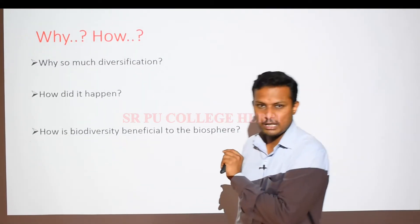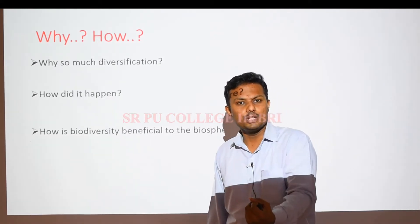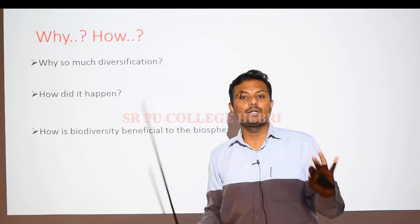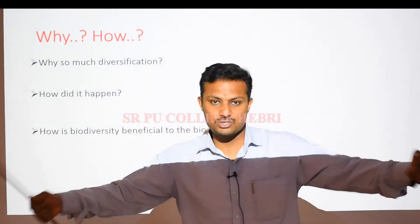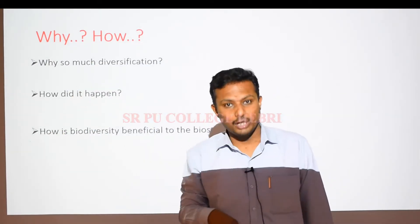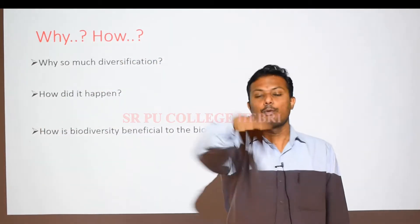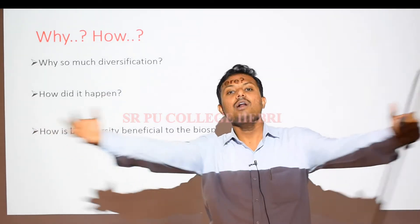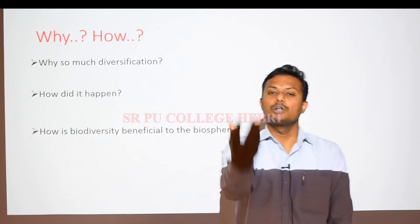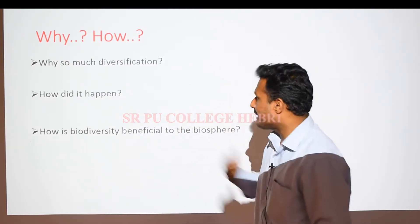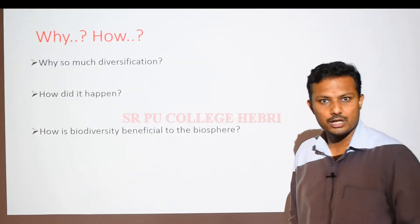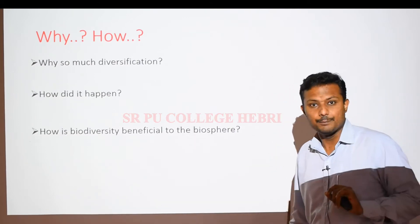There are different theories to explain how the diversity of life forms came about. One theory says organisms started from one point of origin and traveled to different habitats, adapting to environmental conditions, giving rise to different species. Another theory says different life forms were already present in different regions of the earth and started moving toward one common land, developing similar characteristics — forming groups of species. There are many such theories explaining how diversification happened.